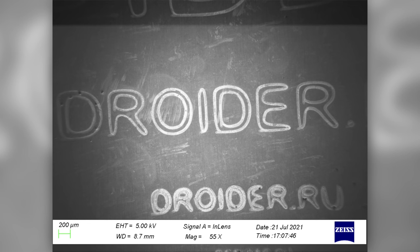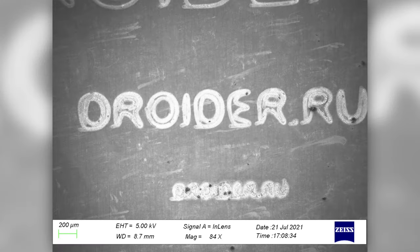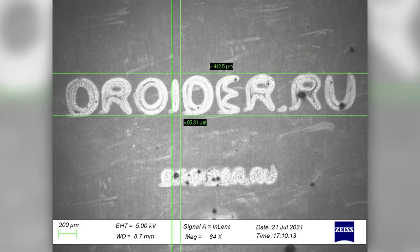You can already see the inscription DROITER with a magnification of 55x. We're going down to the smaller inscription now. I wonder how thick the letter I is in this inscription — let's take a closer look. Only 100 micrometers — slightly thicker than a human hair.